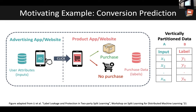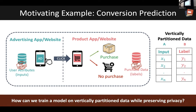The input attributes — namely the attributes of the user as well as the ad — are held with the advertising company, whereas the outcome of whether the purchase was made or not, the labels corresponding to each of these inputs, are held with the product company. This data is considered private for various reasons, including that people don't want to be tracked across different websites. So the key challenge is that we need some way to train on vertically partitioned data while protecting the privacy of the two parties involved.